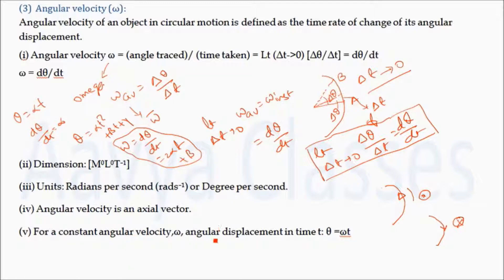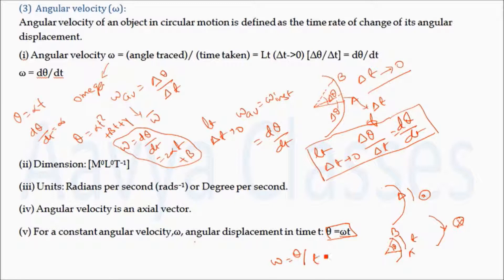For a constant angular velocity omega, the angular displacement in time t is given by theta equals omega t. As the object moves with constant angular velocity, during time t if it makes an angle theta, we can write omega equals theta by t, and theta equals omega t. So the angular displacement made by the object in time t at constant angular velocity equals omega t.